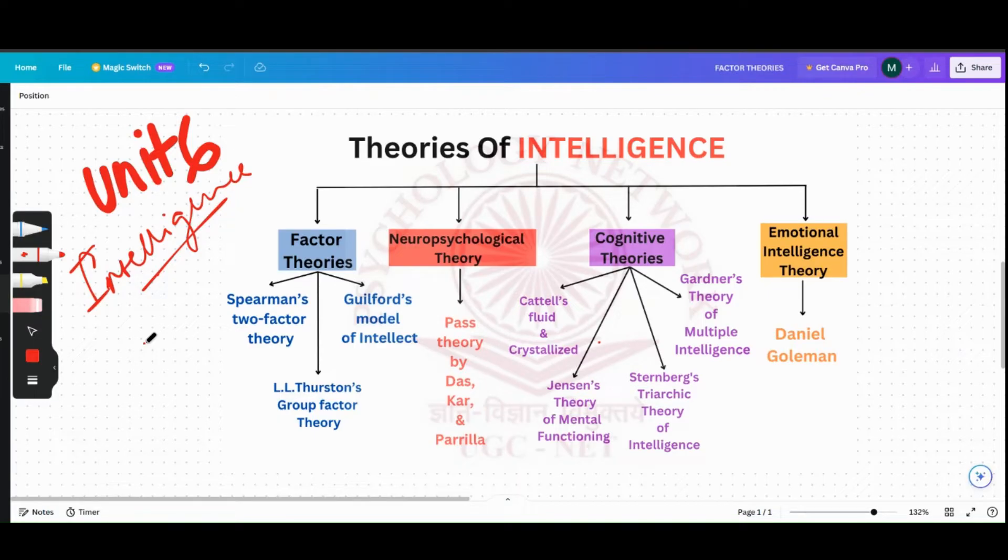The first theory is Spearman's Two-Factor Theory, belongs to Factor Theories. Then comes Thurston's Group Factor Theory, belongs to again Factor Theories. Then it's Jensen's Theory of Mental Functioning, belongs to Cognitive Theory. Then Cattell, Gardner, and Sternberg different theories: Cattell's Fluid and Crystallized Intelligence Theory, Gardner's Theory of Multiple Intelligence, and Sternberg's Theory of Intelligence all belong to Cognitive Theory.